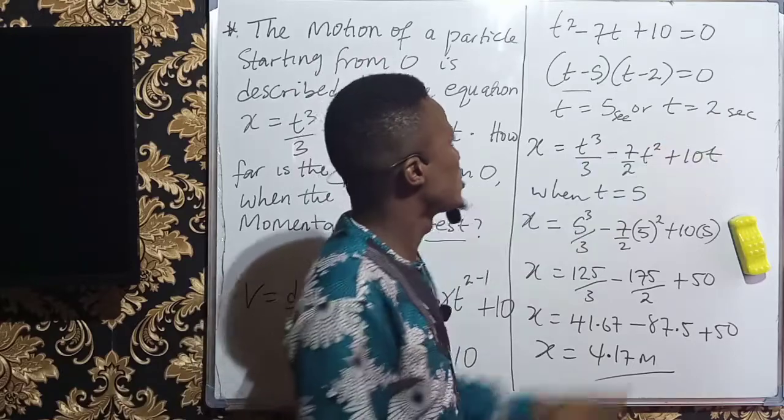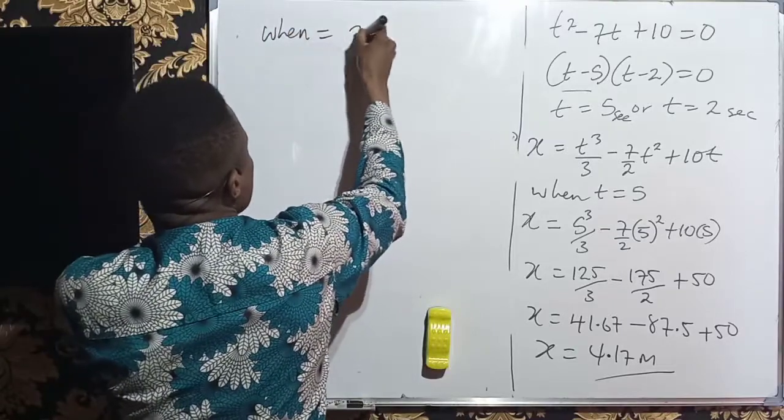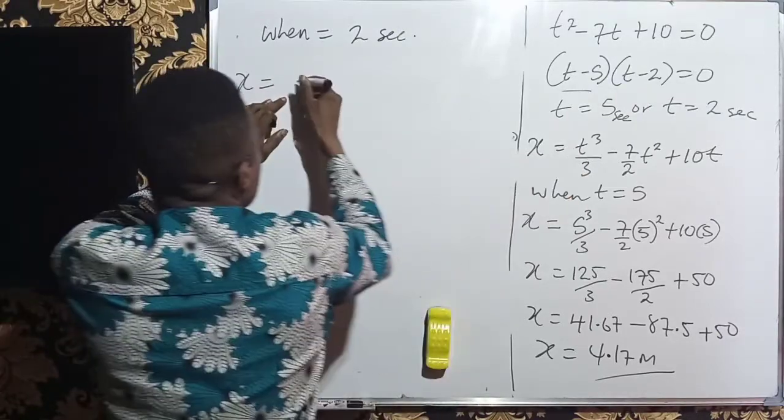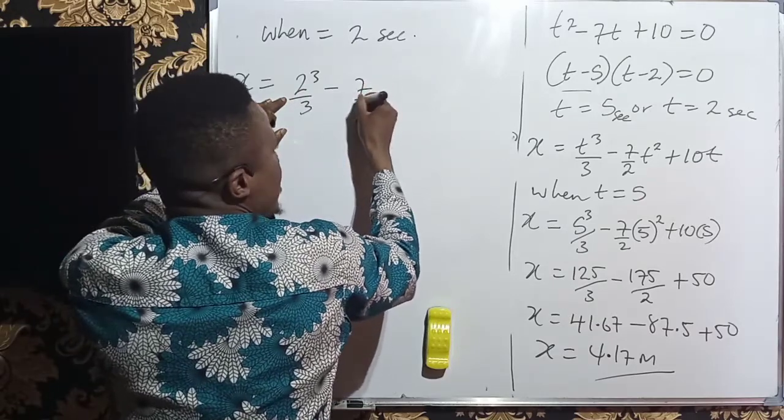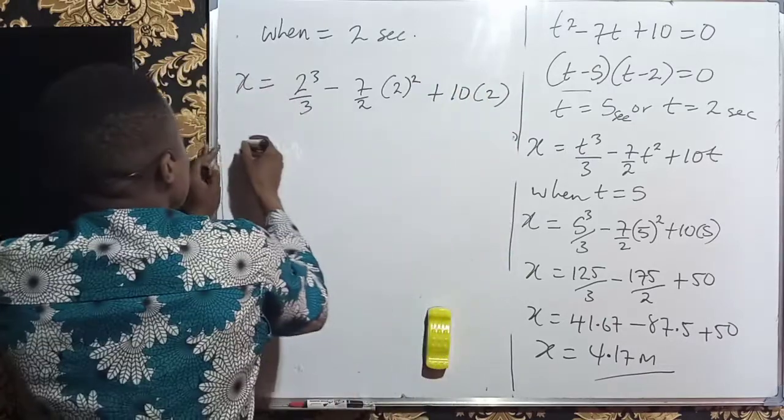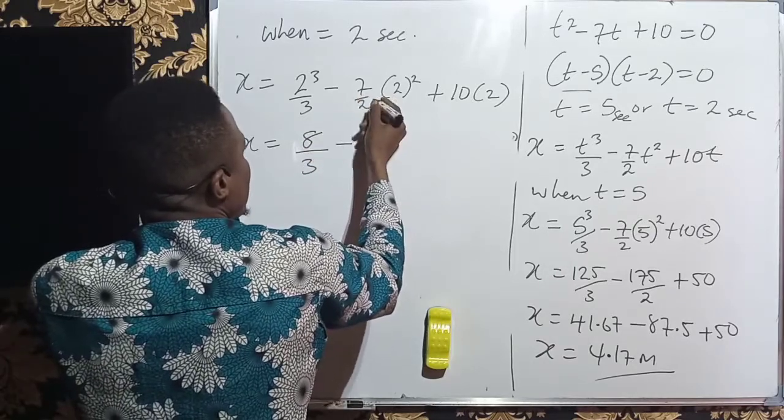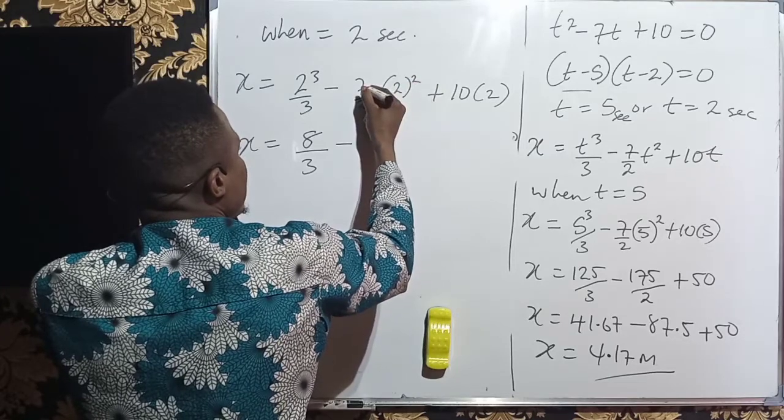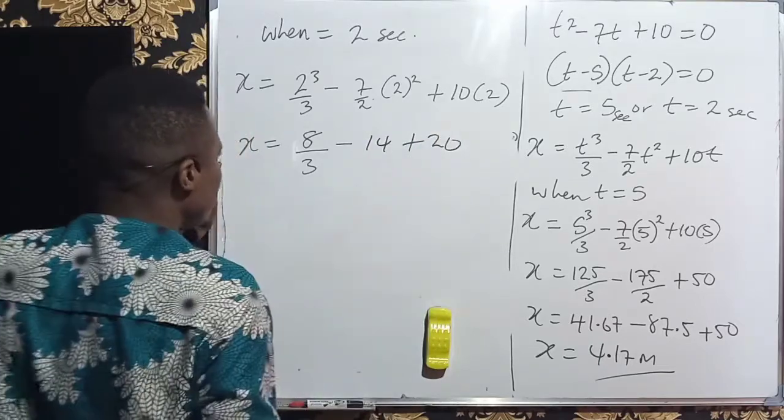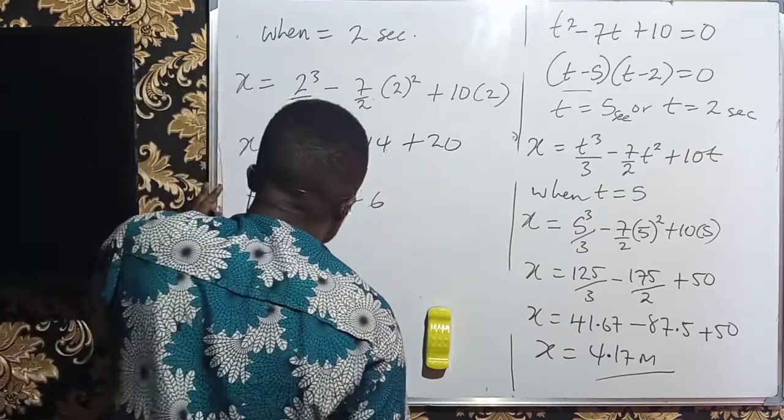So let us solve when t is 2 seconds. When t equals 2 seconds, I have that x will now be 2 to the power of 3 over 3 minus 7 over 2 into 2 to the power of 2 plus 10 into 2. So x will give me 2 to the power of 3 is 8 all over 3 minus 7 times 2 squared is 4, 7 times 4 is 28, 28 divided by 2 is 14, then plus 10 times 2 is 20. So x will give me 8 over 3 minus 14 plus 20 will just give me 6.